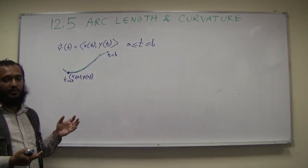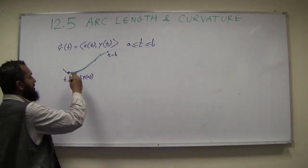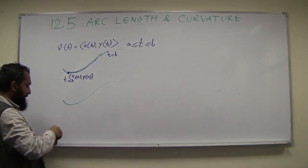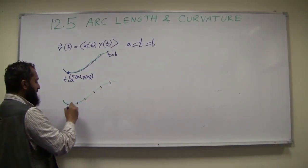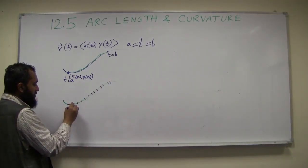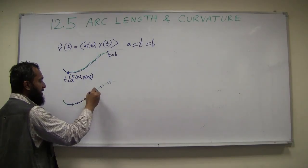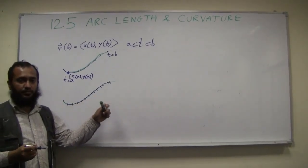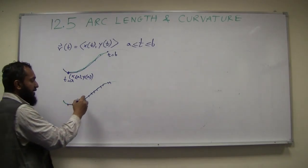If you want a better approximation, as you might guess from Riemann sums, you take more points. So instead of just taking a few points, let's draw the curve again and take a whole bunch of points. Now the difference between these straight lines and the actual curve is less in each segment, and some of them are pretty good approximations.